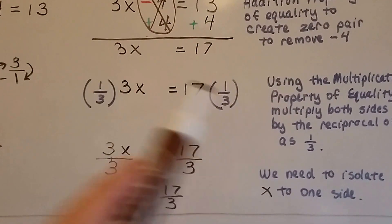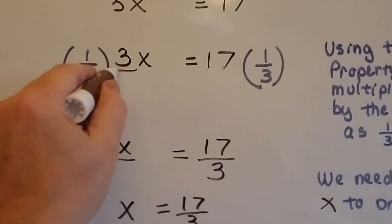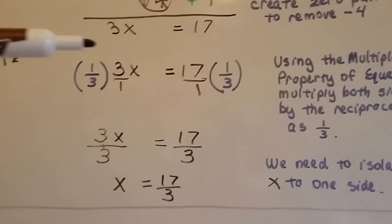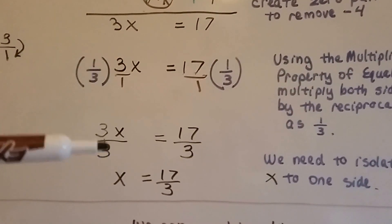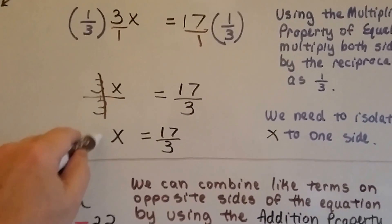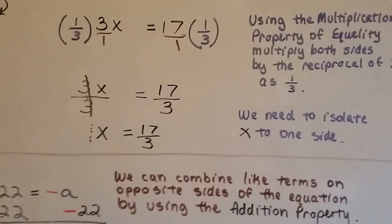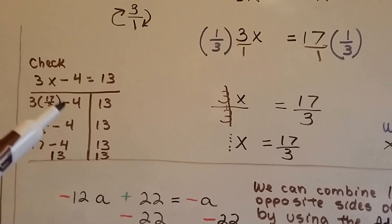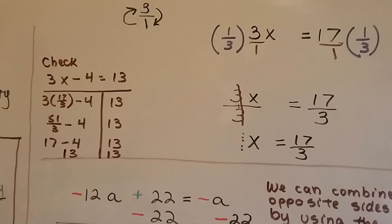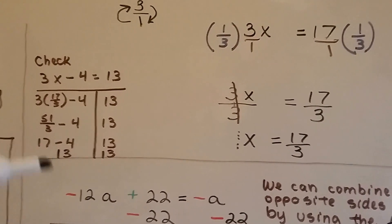We flip 3 to its reciprocal, one third, and multiply each side of the equation by it, eliminating the coefficient and getting x by itself. We get 3 over 3 times x, which creates a 1 — so we have 1x equals 17 thirds. We've isolated x. We can plug 17 thirds into the original equation to check it, and it comes out 13 equals 13. 3 times 17 is 51 over 3, which is 17, and 17 minus 4 is 13.